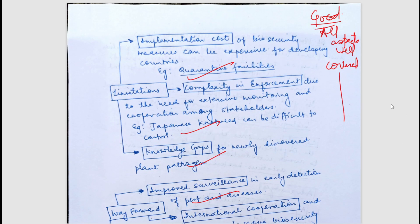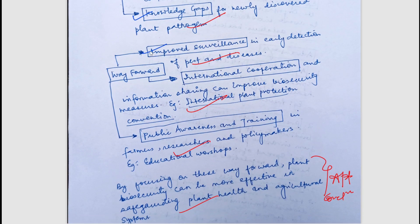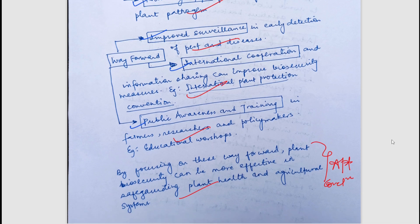The limitations of plant biosecurity were also mentioned. The biggest is implementation cost — quarantine facilities, special machines, and storage rooms all require huge investment. Complexity in enforcement arises because different countries have different laws and management systems. Knowledge gaps were noted as another limitation. The way forward includes improved surveillance, international cooperation, a uniform fair law across countries, public awareness, and training.